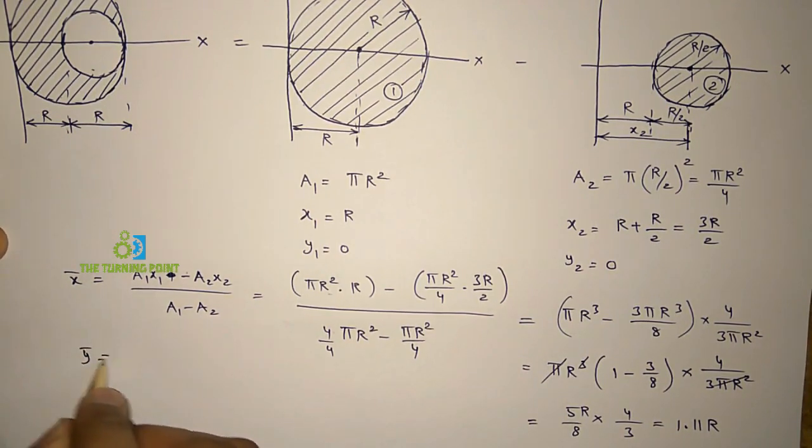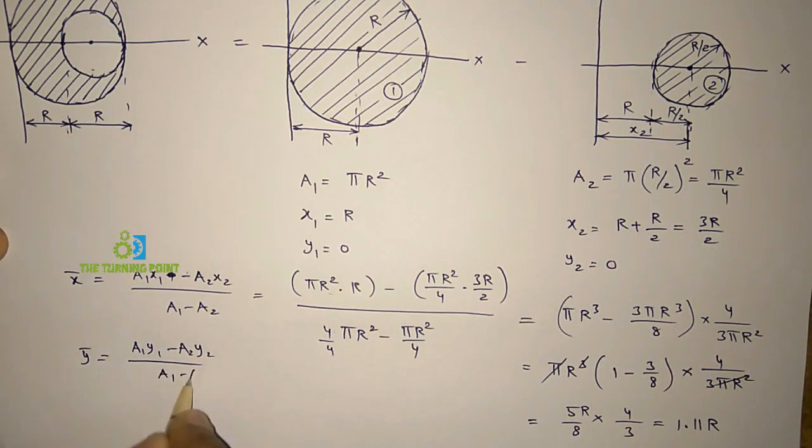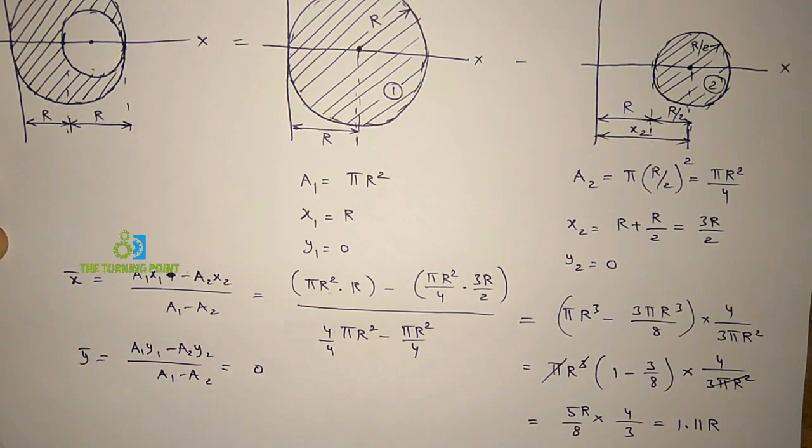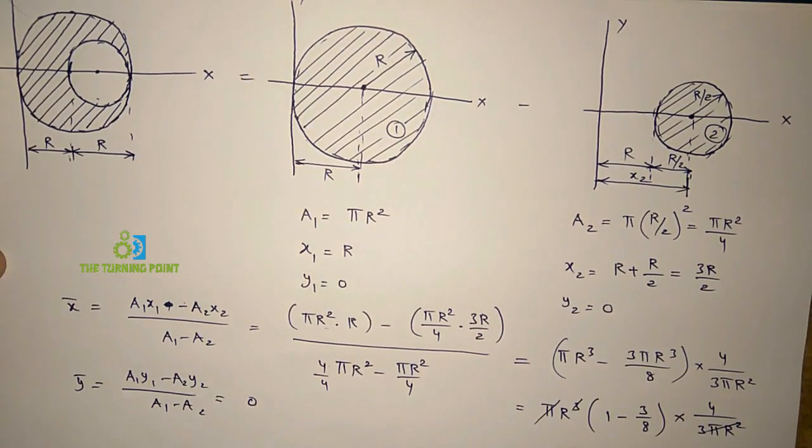And if you want to find y bar, y bar is a1 y1 minus a2 y2 by a1 minus a2. So y1 y2 both are 0. So then you will get y bar 0. So no need to do that. And you can mention as the given figure is symmetrical about x axis, y coordinate will be equal to 0.